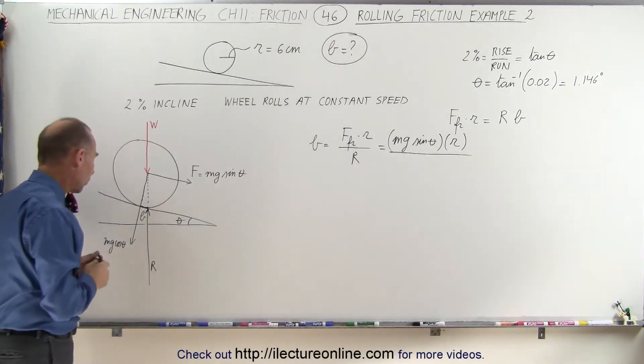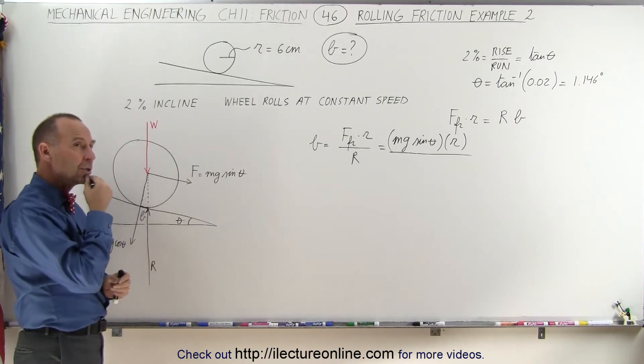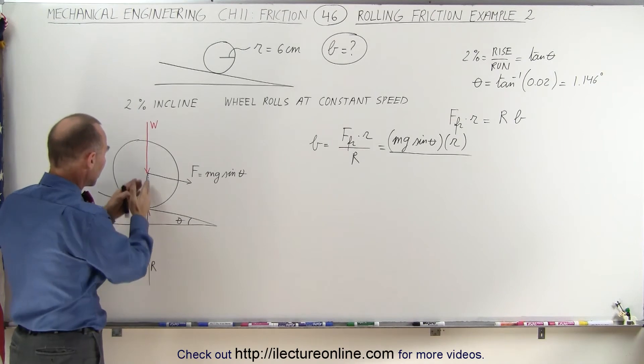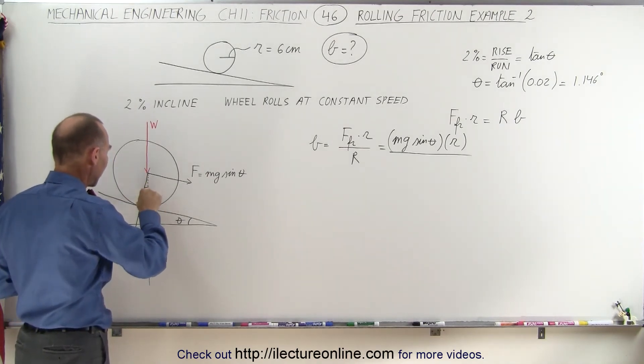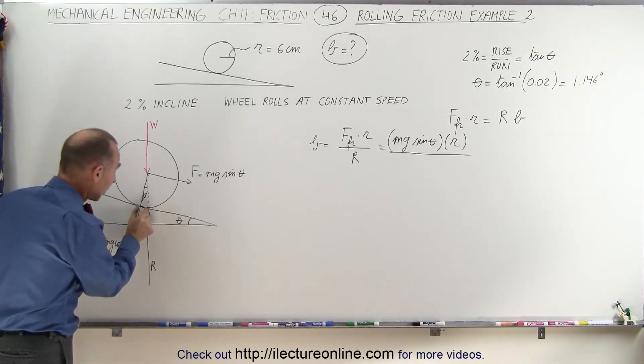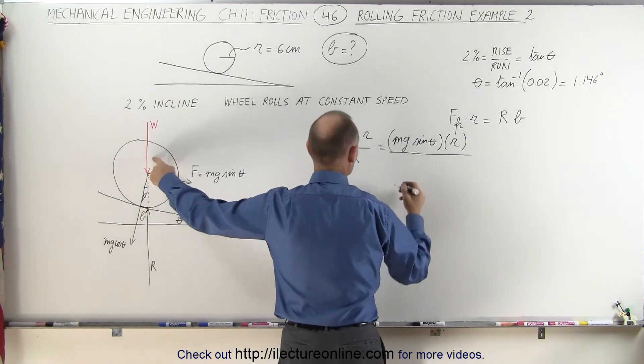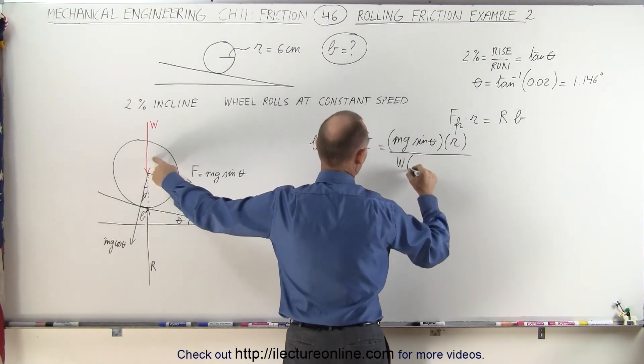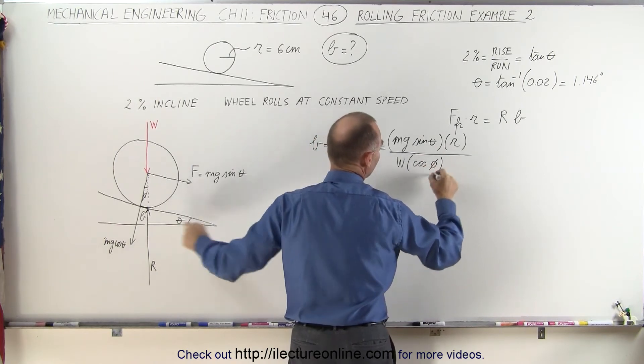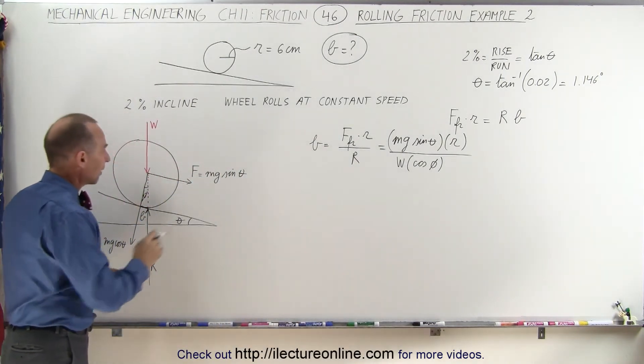Now the reaction force is going to be equal to the normal force times the cosine of the angle, the angle that we make right here. So we don't know what that angle is. Let's call that angle phi, but it's a very tiny angle because B is expected to be a very small number. So let's say that R is going to be equal to the load W times the cosine of the angle, the cosine of phi. Now W here has to be the same as mg, so we can replace that.